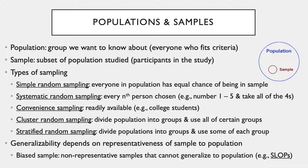In systematic random sampling, one approach would be to number everybody on a list — one through five, repeating — and then take all of the fours, for example. Another approach would be to alphabetize all students on a roster and then select every 25th student to participate in a survey.